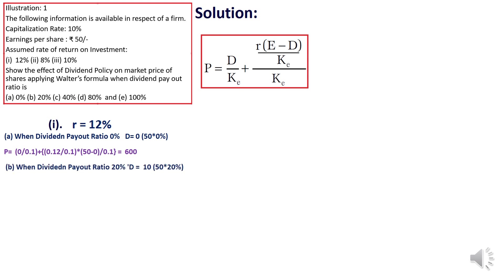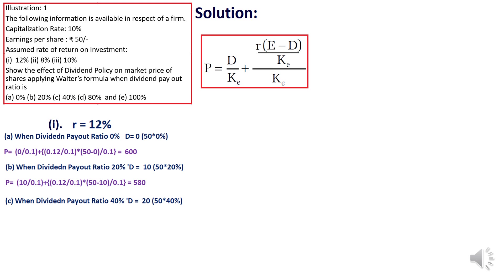When dividend payout ratio is 20%, D equals 50 × 20% = 10 rupees. Applying the formula with K = 0.1, R = 0.12, and (E minus D) = 50 minus 10 = 40, the value of the share is 580 rupees. At 40% payout, D = 20 rupees, giving a share value of 560 rupees. At 80% payout, D equals 50 × 80% = 40 rupees, giving a share value of 520 rupees.